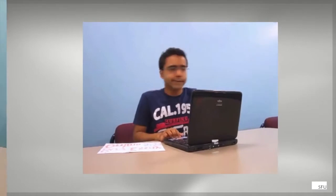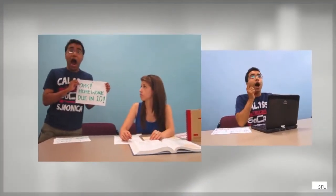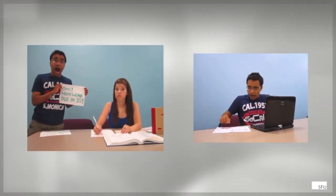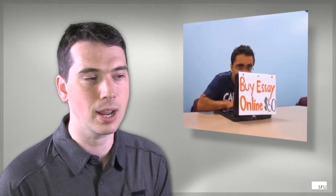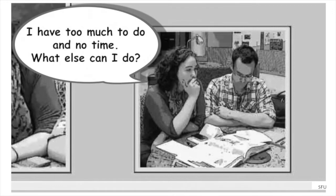Quite a number of students will explain they've had problems with academic integrity, or they'll get called in and asked what happened. They'll usually say they didn't understand it was going to be not allowed, or they didn't know that this was going to be a problem. If they're going to try and explain it away, they'll say they didn't have time to do it, or the material was really hard.